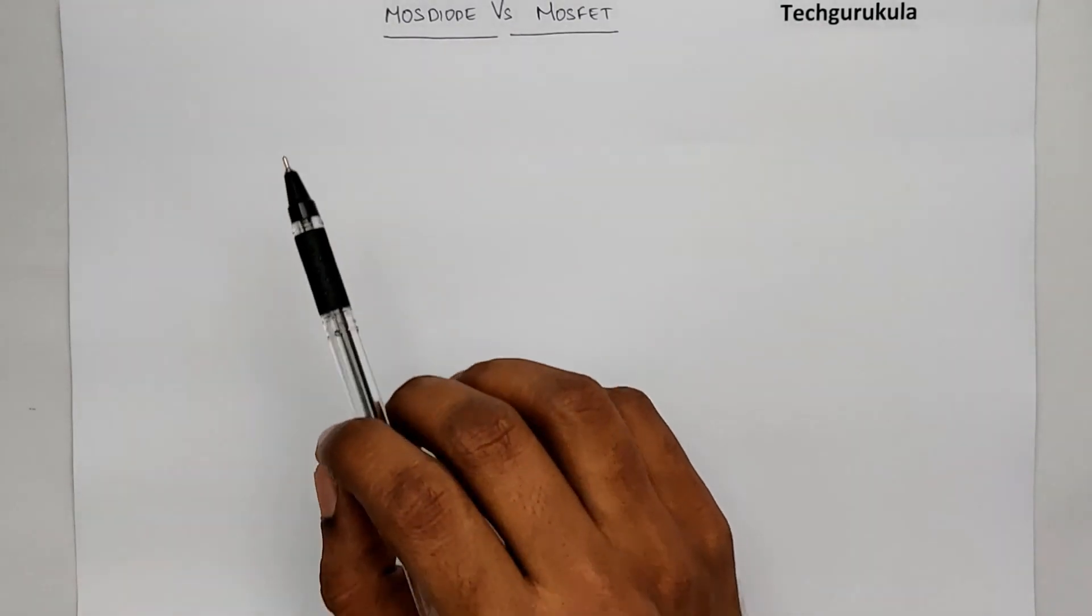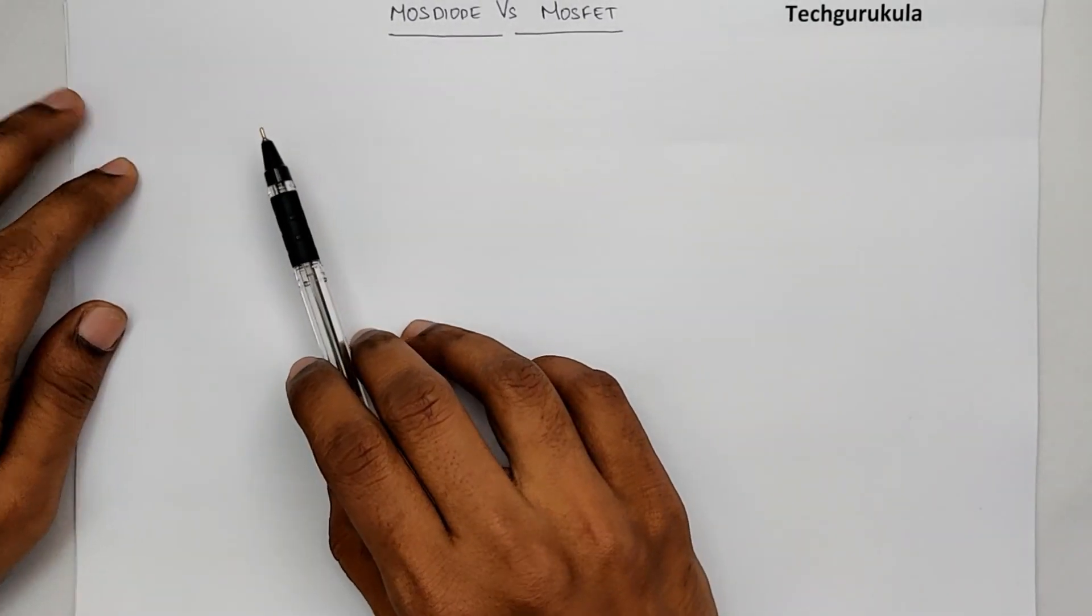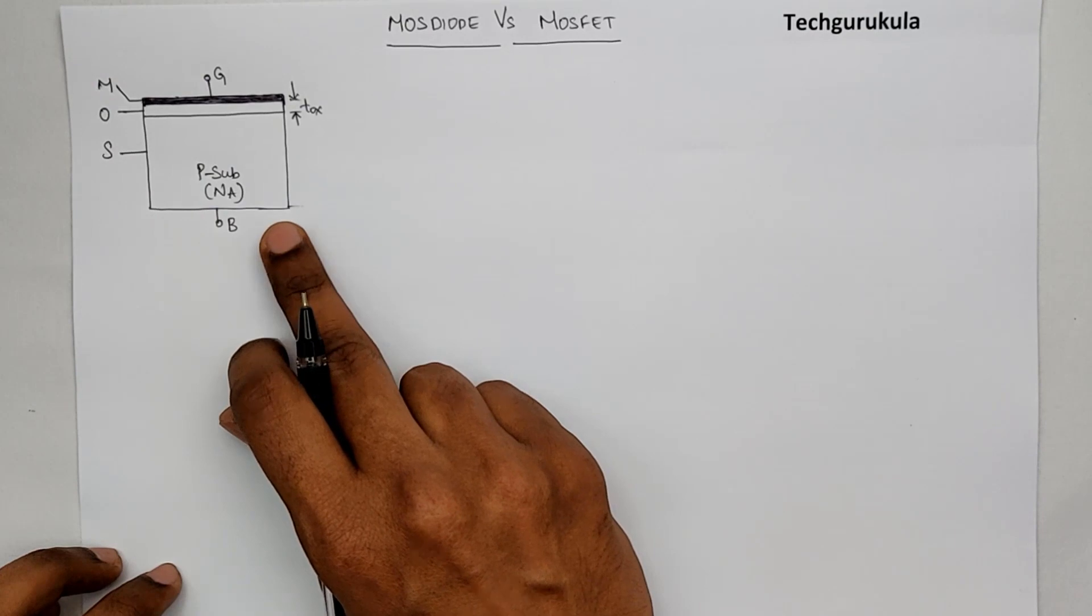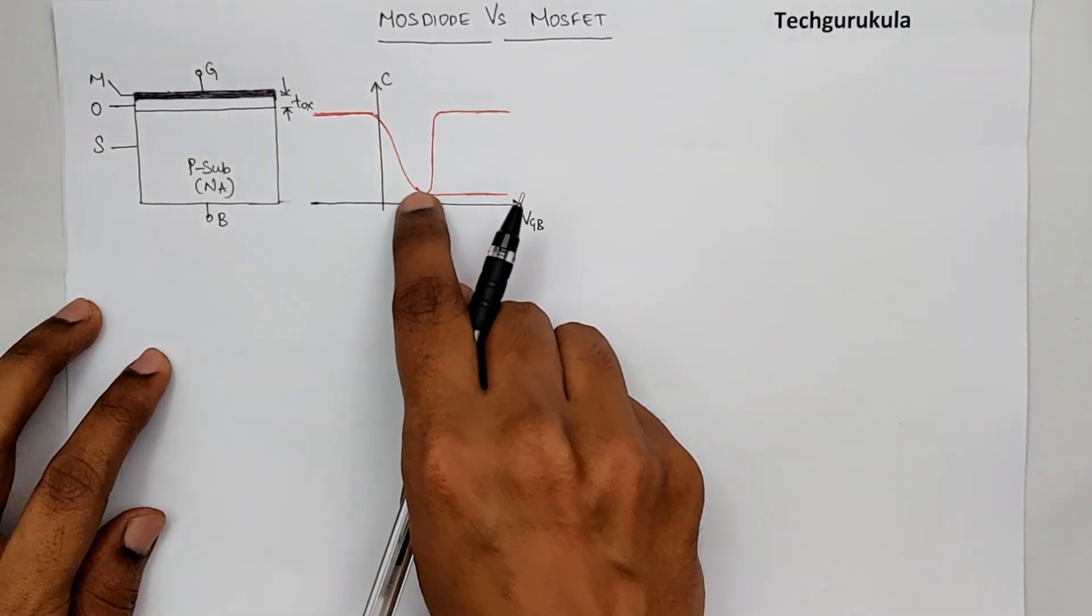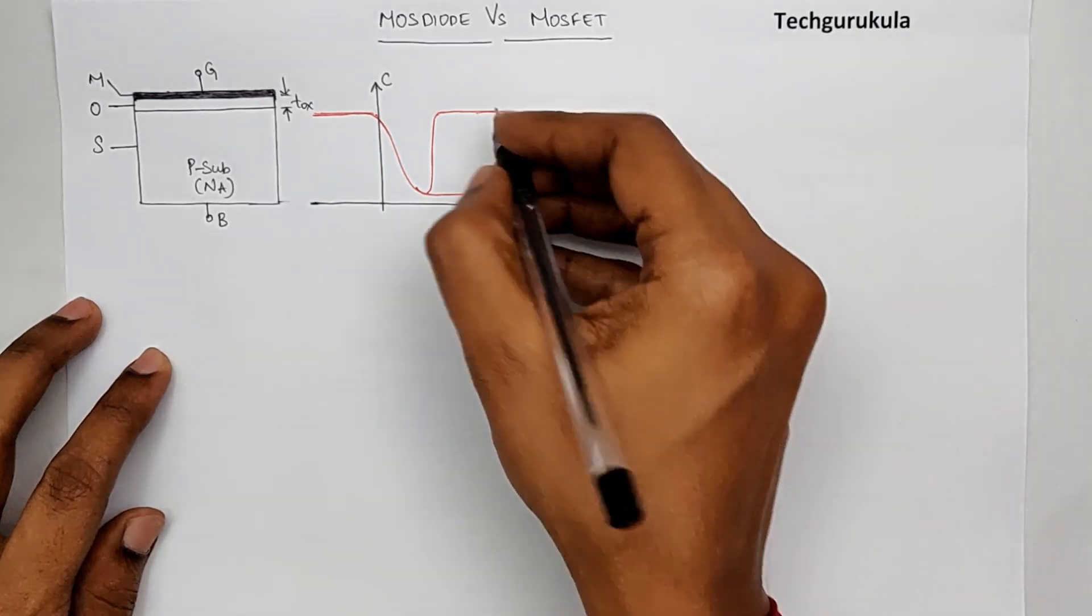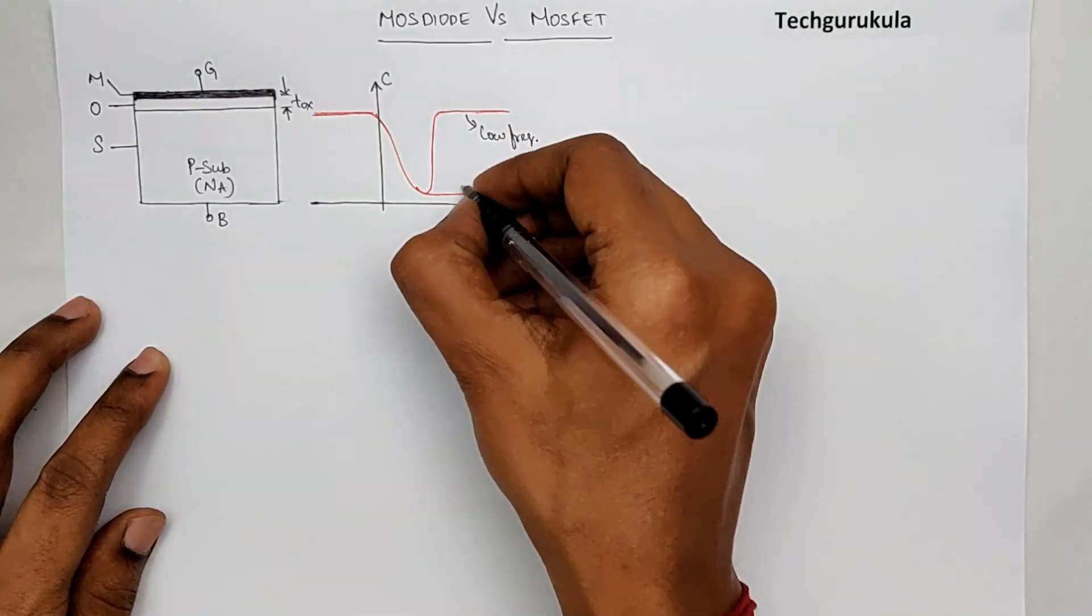To start with, let me take a MOS diode in which the CB characteristics were like this, in which this curve was for low frequency, and this curve was for high frequency.